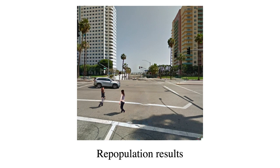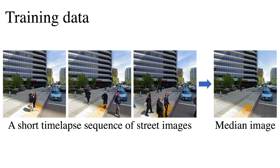Our framework is trained on short time-lapse image sequences gathered from Google Street View. In these time-lapses, objects are generally in motion. We use the median image as a ground-truth clean plate image to get rid of the moving objects and their shadows.